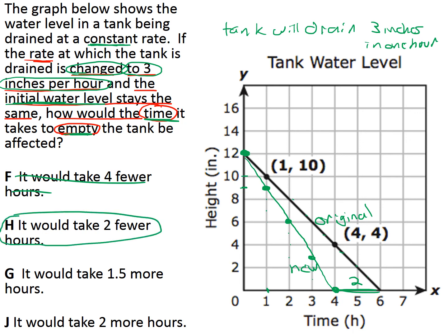Let's read the rest of the choices. It would take one and a half more hours — no, because it's taking less time since it's draining faster. It would take two more hours — no, that's not true either because it's draining faster. The green line, our new line, means it actually drains in less time. So it's going to take two fewer hours, and that must be the correct answer choice.